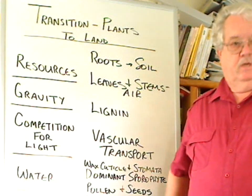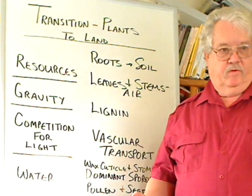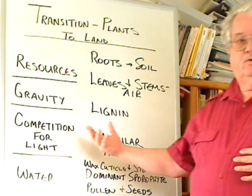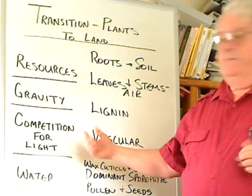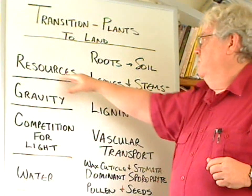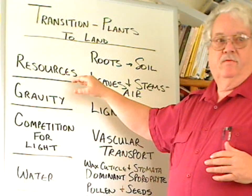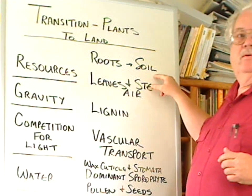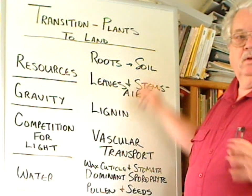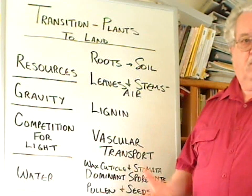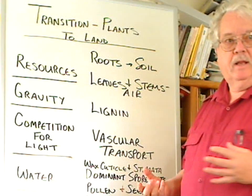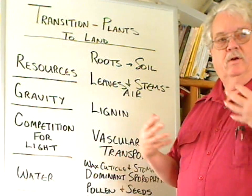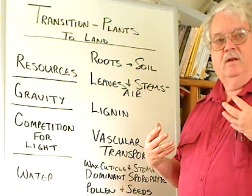There are several structural changes that plants have undergone in order to make this transition to land. Relative to the isolation of resources, we have roots that get minerals and water from the soil. They're highly permeable, very readily able to capture materials and transport them into the plant.